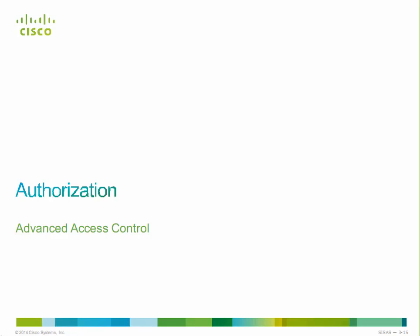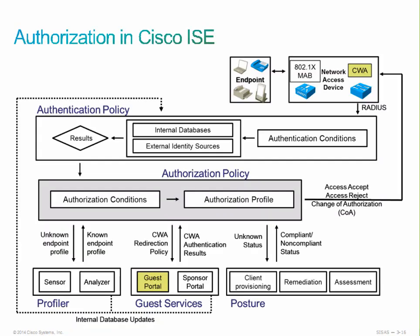We'll talk about downloadable ACLs, authorization profiles, authorization policies, how we build compound conditions for authorization, authorization configuration procedures, rule matching logic within ICE, how to configure an authorization profile and policy rule, how to tune the default authorization policy rule, how to verify machine and user authorization using the GUI, and how to verify that downloadable ACLs are assigned to the authenticator.